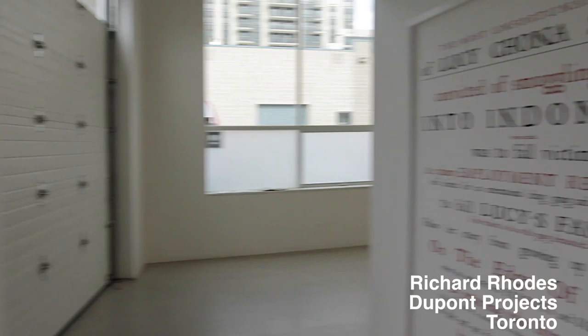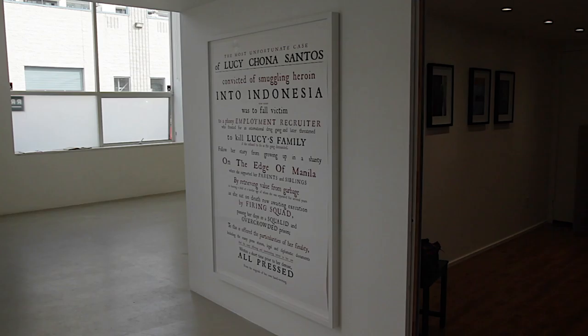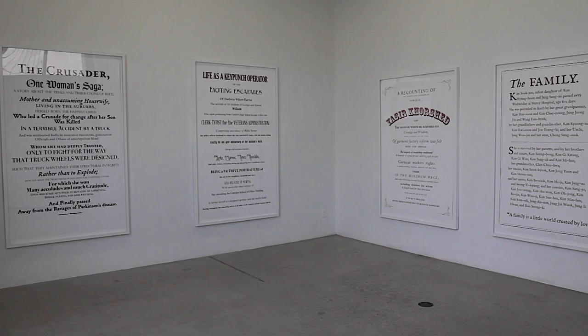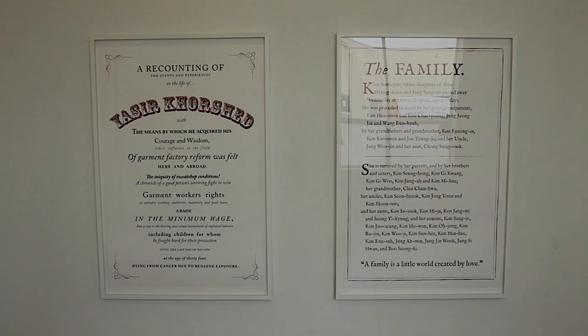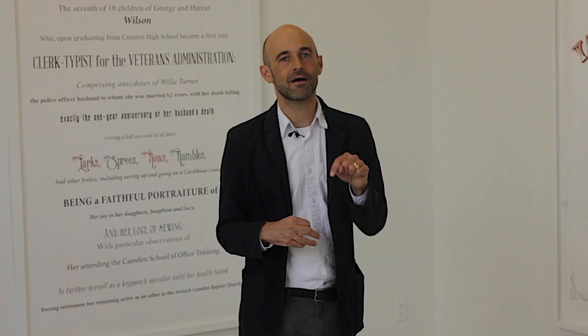Canadian artist Ken Lum's recent exhibition at Richard Rhoads DuPont Projects continues Lum's tradition of using text to represent individuals, or more importantly, subjectivity. His focus in this one is on obituaries. Obituaries are not about death at all — they're about the life of the individual. So there's this sleight of hand. These are contemporary obituaries but they're rendered in an old-timey way.